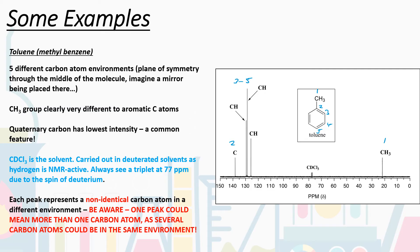Typically we do these NMRs in a solvent called CDCl₃, deuterated chloroform. The reason is that hydrogen is NMR active — you don't want to use a solvent that contains hydrogen because it would interfere with your spectrum. If you used CDCl₃ for carbon NMR, you'll always see a little triplet at 77 ppm. This is because deuterium is also spin active, with a slightly higher spin than hydrogen, so rather than just a single peak you see a triplet — three lines. If you ever see three lines of equal intensity at around 77 ppm, that's just the CDCl₃ solvent.